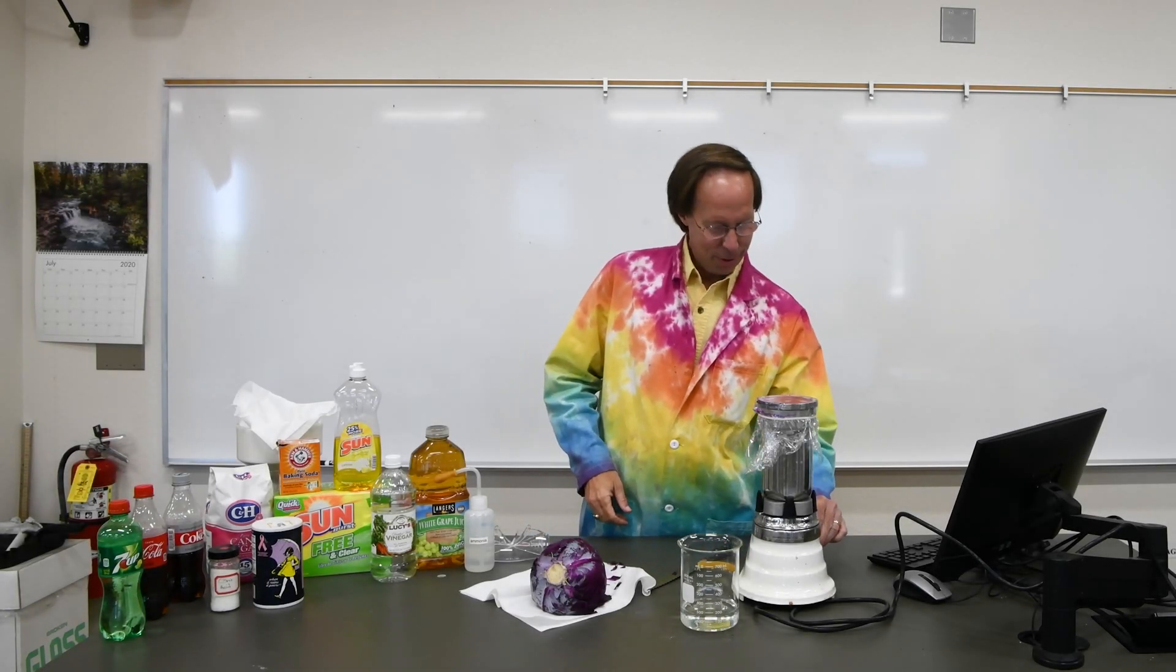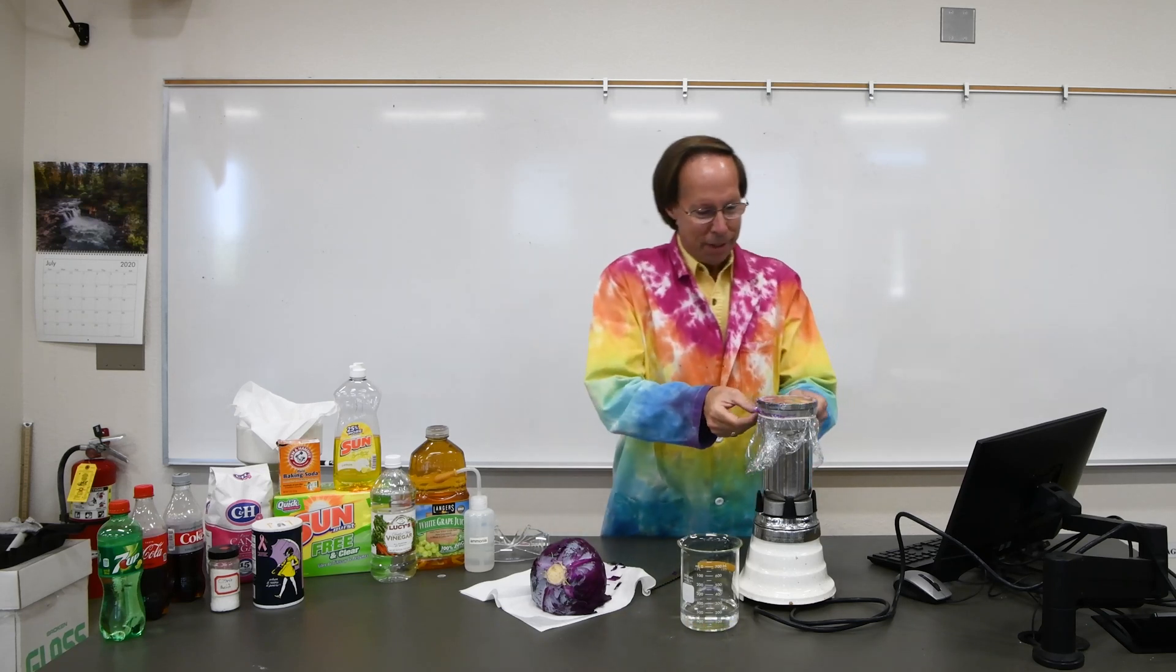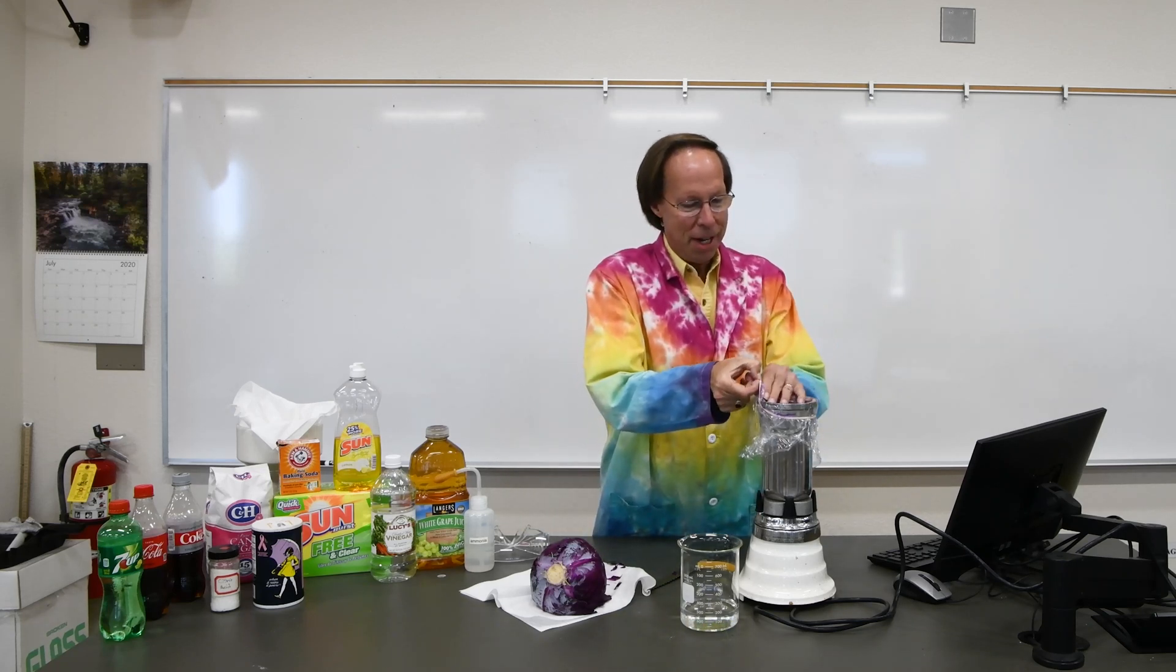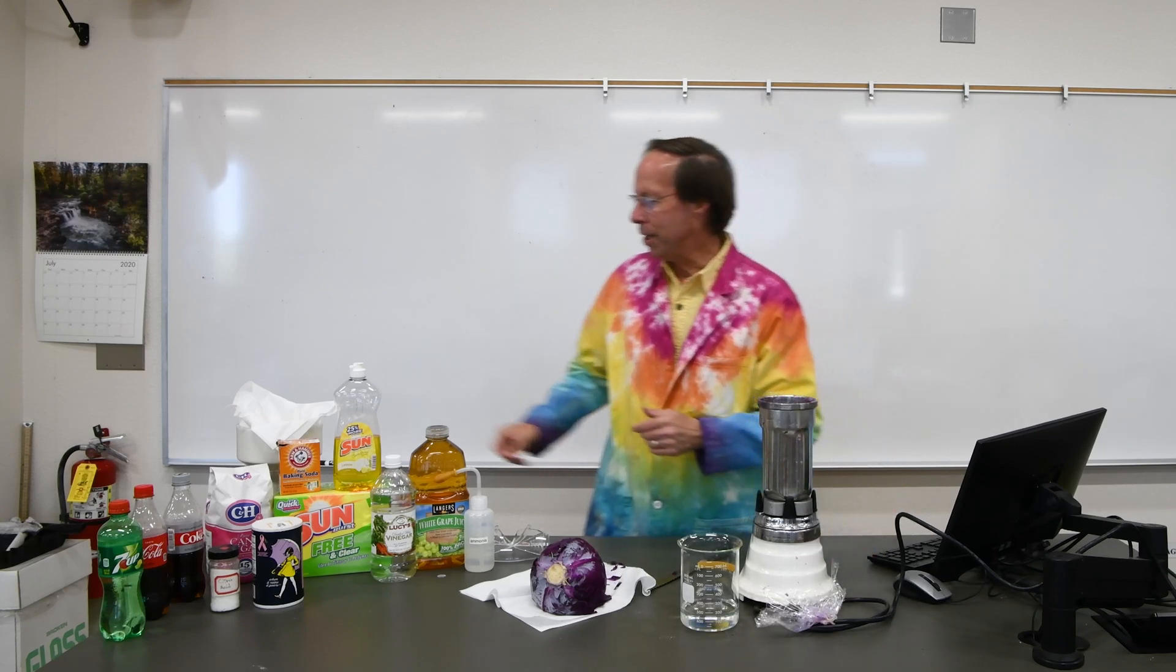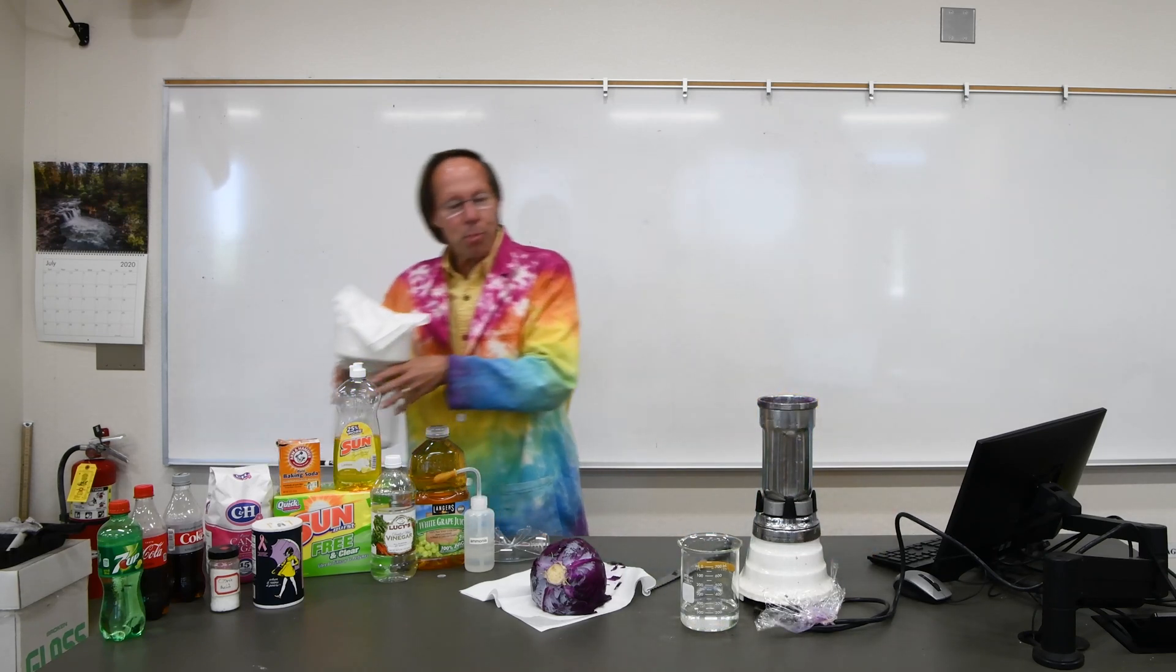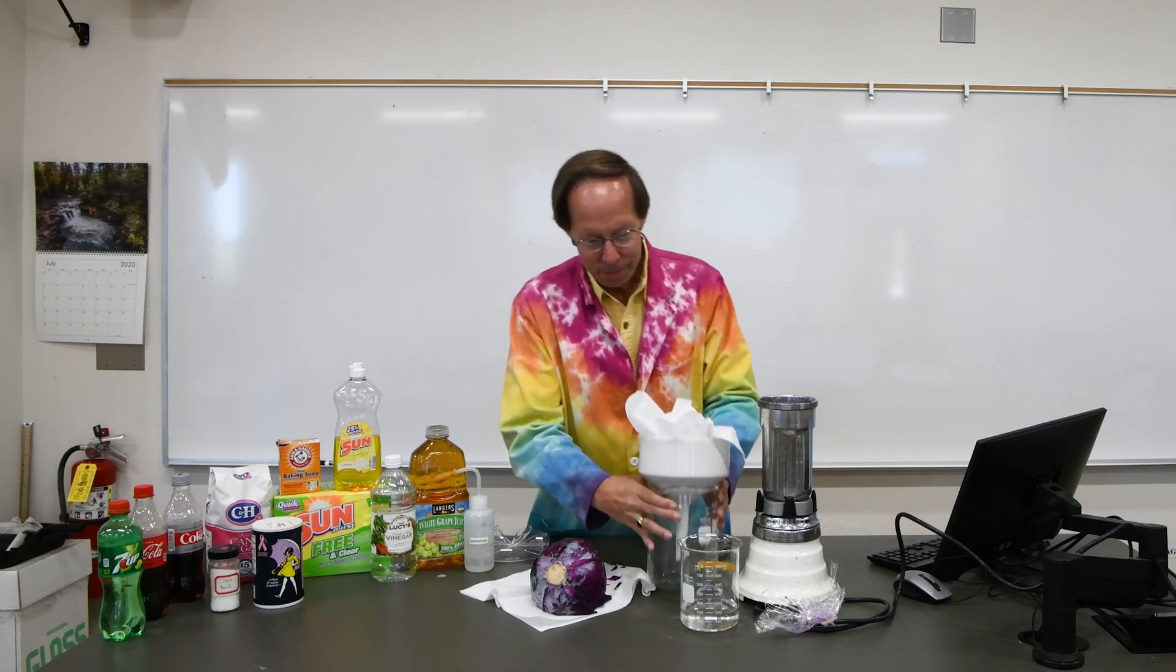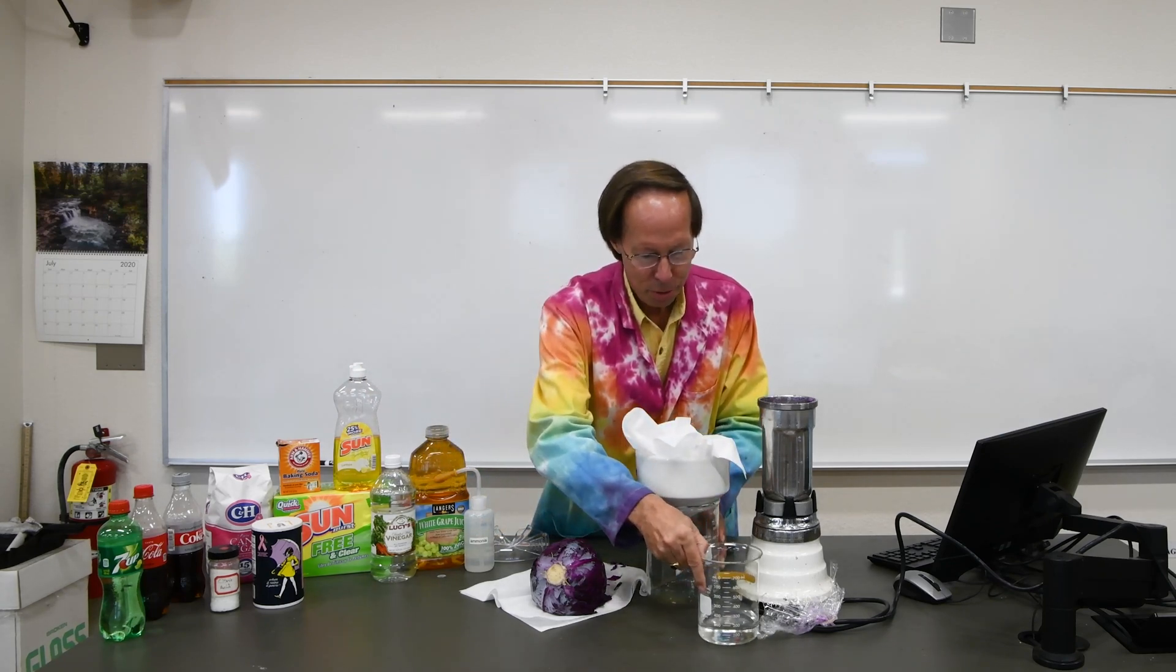All right, I think that's enough. Let's turn that off. It's pretty noisy. Now we have this lovely cabbage juice slurry in here. Looks like a purple smoothie. We're going to have to remove the cabbage solids from the juice. So to do that we're going to use a filter.